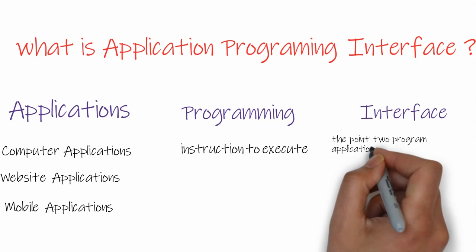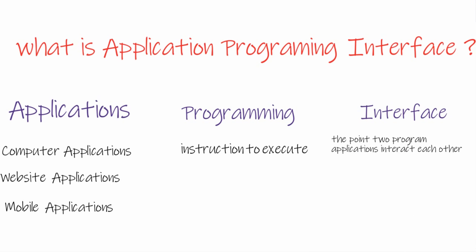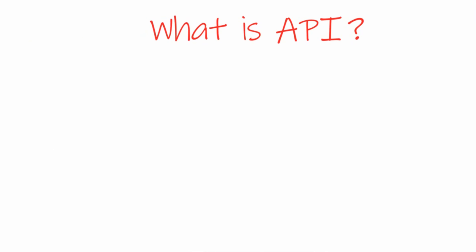The next word is 'Interface.' Interface is a point where two systems meet and interact with each other — a point where two programs or applications interact. That is called an interface. Now you have some understanding of each word: application, programming, and interface.